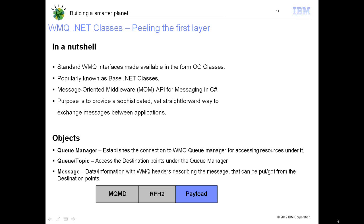Typically, how a message will look like — so I've got quick rectangular boxes there. We have an MQMD, which is a descriptor header, and then RFH2, which is to allow some user-defined properties to be carried as a message header. And then the payload, where the actual data or information exchanged between the applications can be added. So this is how a message object will look like.